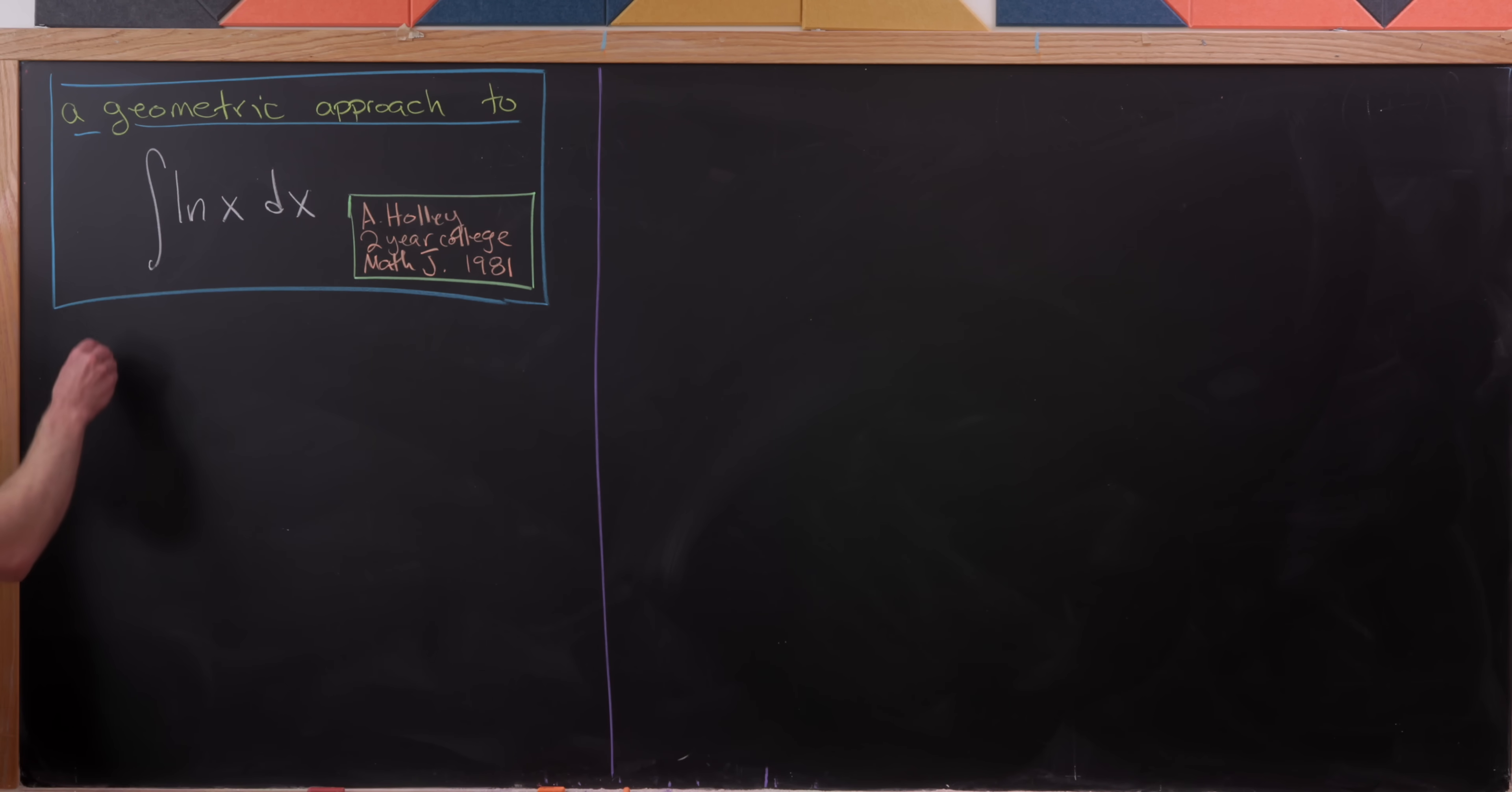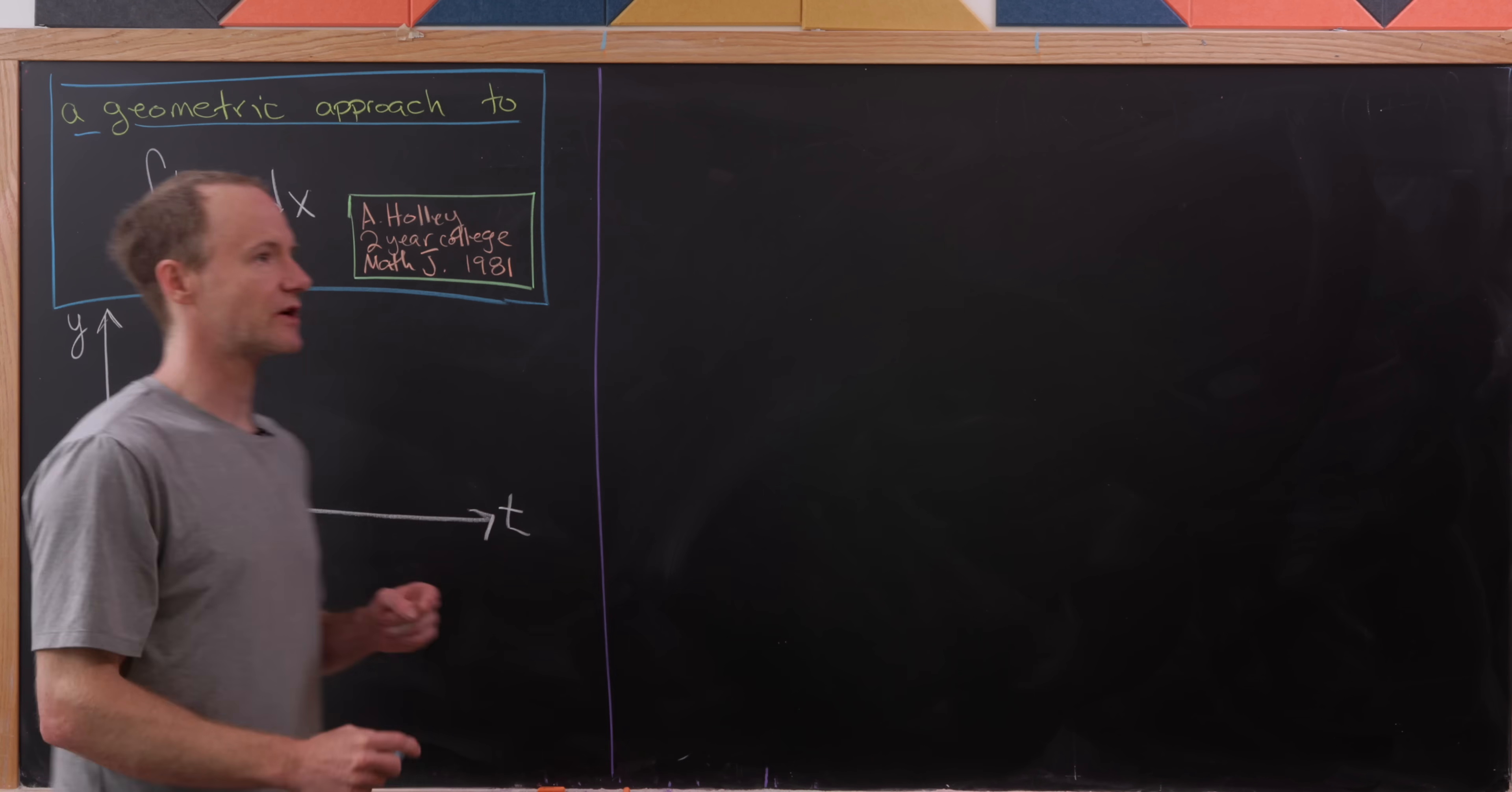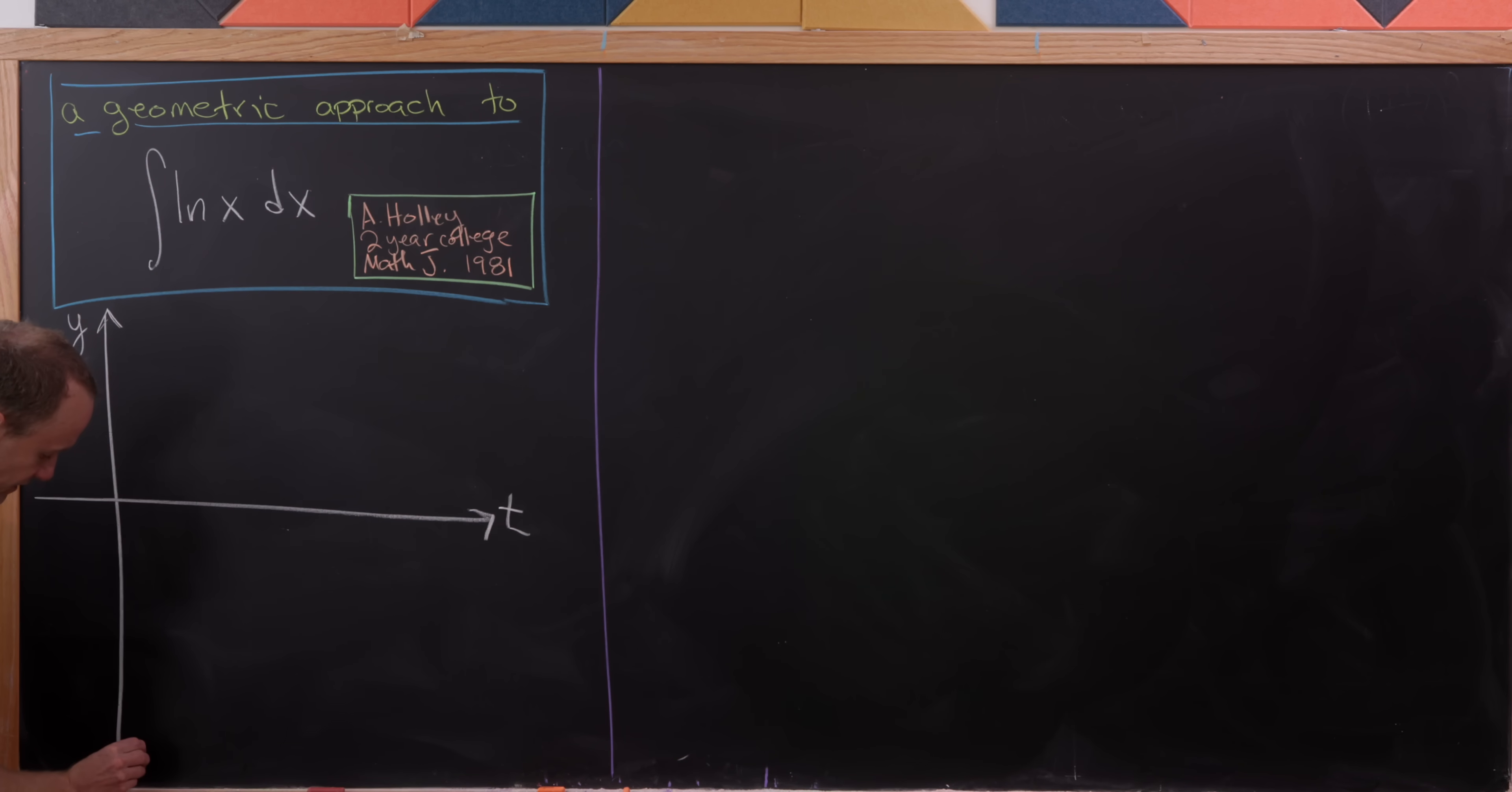This is all going to be based off of the following picture. This picture lives in the Cartesian coordinate plane, and I'm going to say that the horizontal axis is the t-axis, and then the vertical axis is the y-axis. Now it shouldn't be too much of a surprise that we're going to put the graph of the natural log onto this picture here.